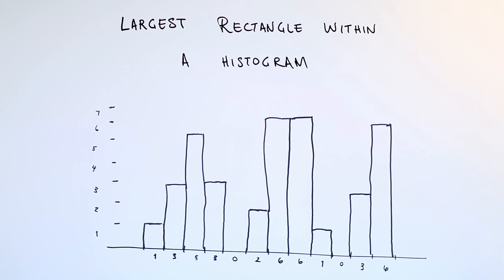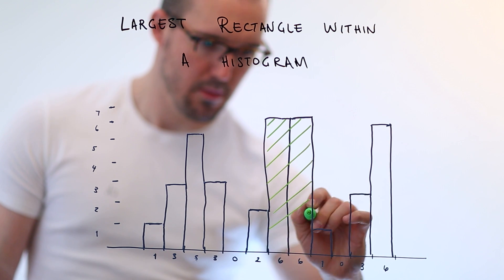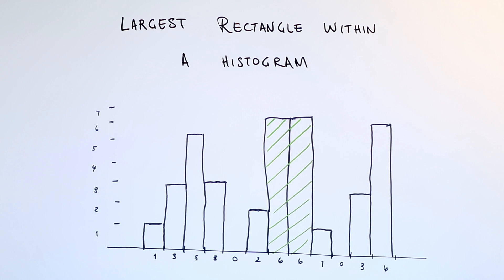The goal here is to figure out: if you have a histogram, what is the biggest rectangle you could draw within it? From the far left side to the far right side, where in that histogram is the biggest rectangle? In my example here it's pretty obvious that the tall six-by-two rectangle is the biggest rectangle, giving you an area of 12. That's the obvious case, but there are lots of other cases that are not obvious at all.